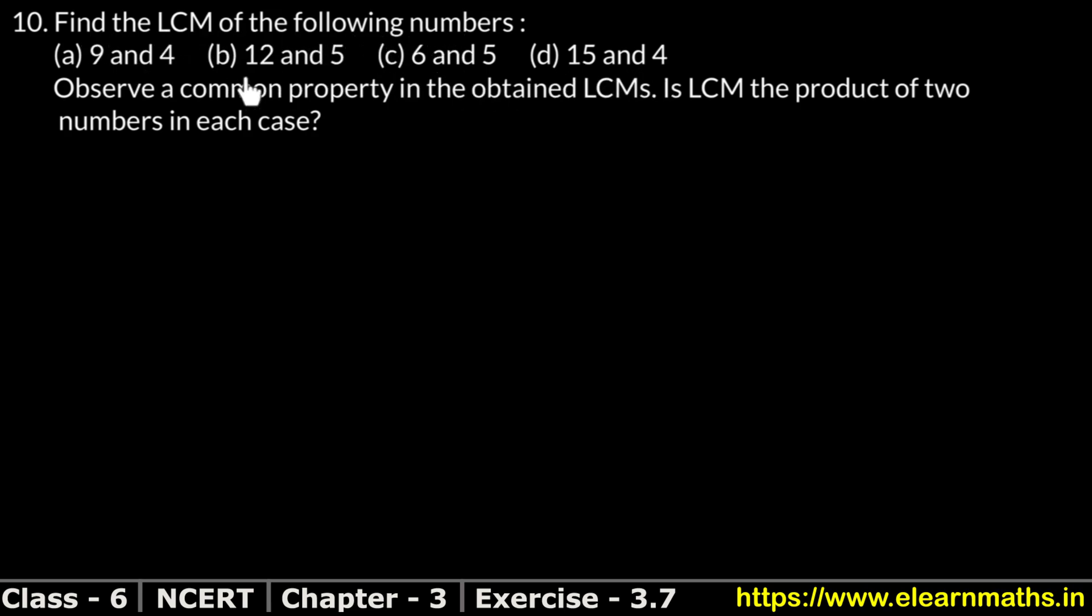We have to find LCM of all these numbers. Observe a common property in the obtained LCMs. We have to find what property, what common property the LCMs have. Is LCM the product of two numbers in each case? Is the LCM we got the product of these two numbers or not?